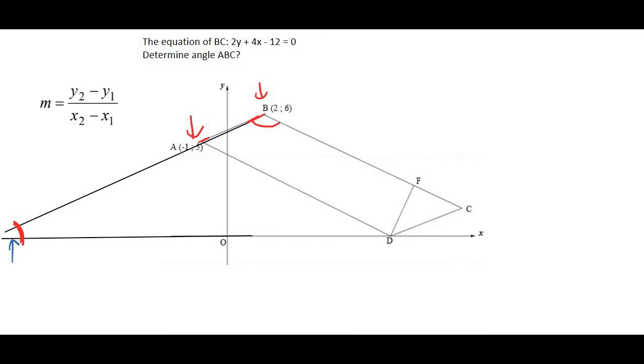We'd need the gradient formula. And I'm going to do that for point A and B. So we're going to look at the gradient of AB. And so that's just going to be 6 minus 5 over 2 minus minus 1. And that's eventually going to give us a third.